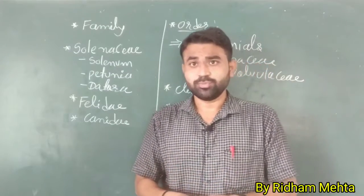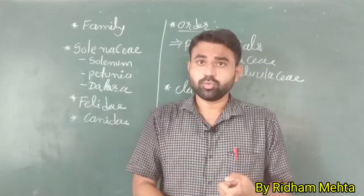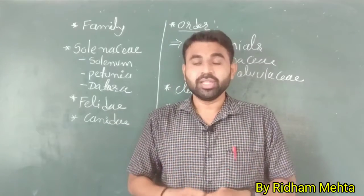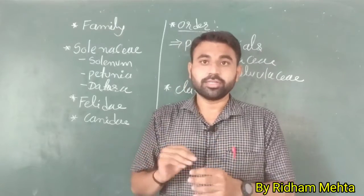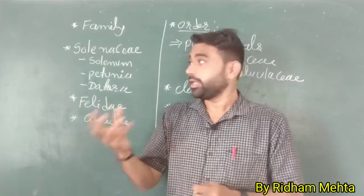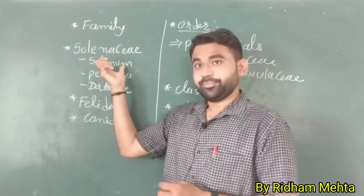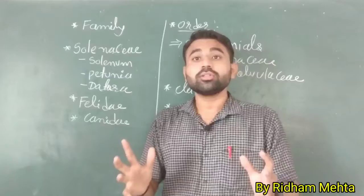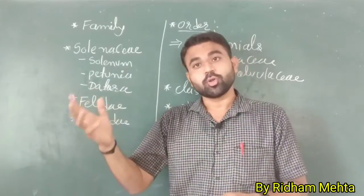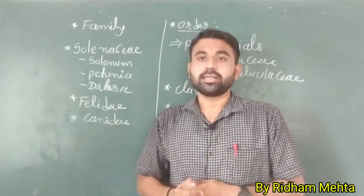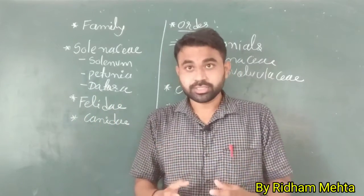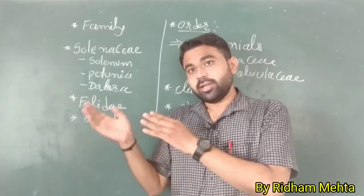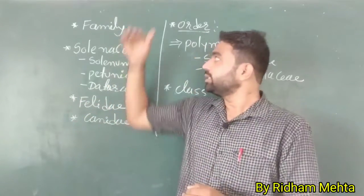Now talking about plants — potato, tomato, and brinjal all belong to the same genus Solanum. Besides Solanum, there are many other plants included in that genus. Then Petunia and Datura — these genera Datura, Petunia, and Solanum are all included in the same family called Solanaceae. So families are made up of different genera with a variety of shared characteristics.